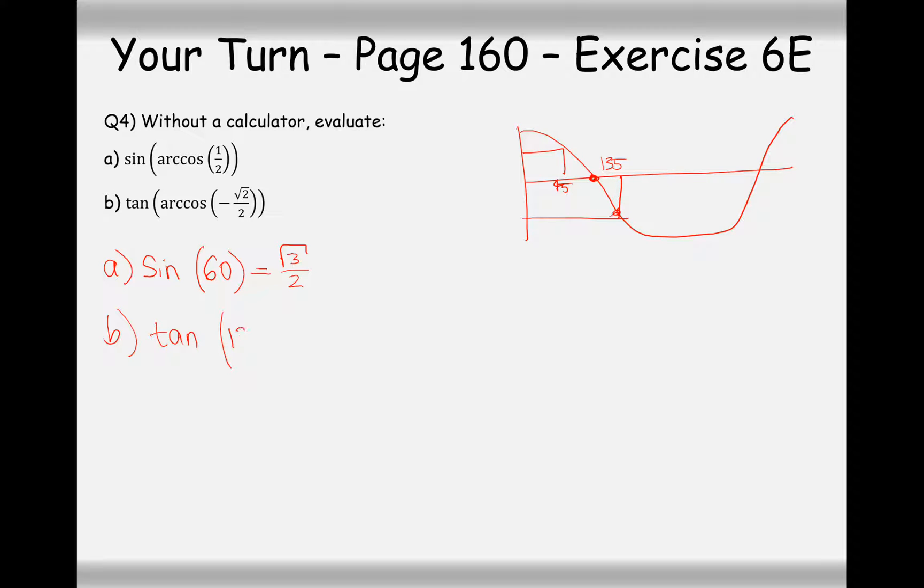Now tan of 135, well, it's going to be in the negative part of the graph here. We've got 180 here. 135 is slap bang in the middle of 90 and 180. So a little bit of rotational symmetry around this point here will give you the 45 degree point here, which is a value 1, so it's probably going to be minus 1. You can always check these in your calculator just to make sure you've got them right.